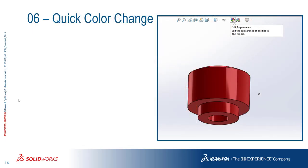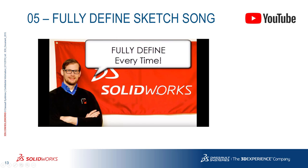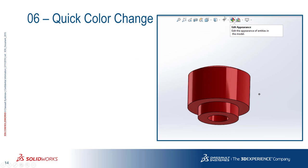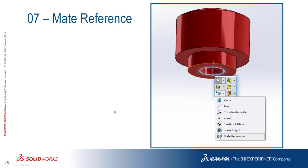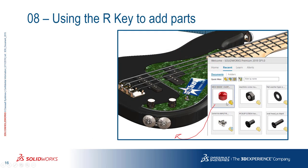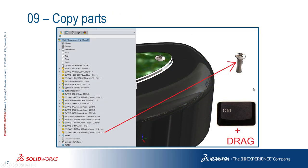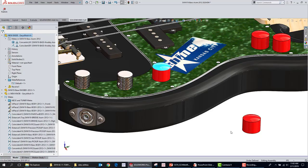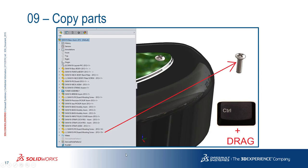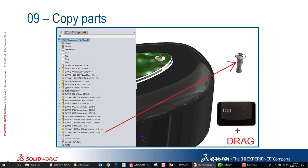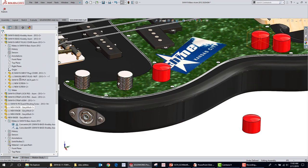So we talked about Fully Defined Sketch — make sure you look up that video. Quick color change: go up and hit that little beach ball at the top. Mate references are awesome — you can access them from the S key. Use the R key to bring in your recently added parts. You can also copy parts with Control+Drag — a lot of people don't know about that. I once taught this tips and tricks class to some experienced users at a customer site, and when I did a Control+Drag from the tree, one guy just about fell out of his chair: 'Are you kidding me? We've been doing Insert Part and browsing for that part for years!' Hold Control and drag if you need to bring in another copy of your parts.